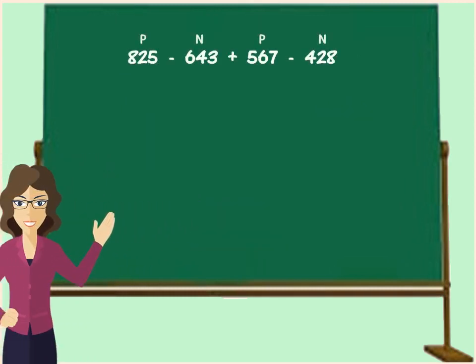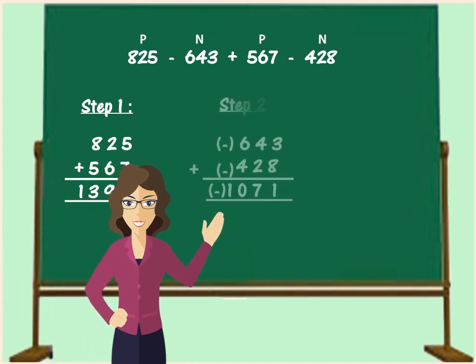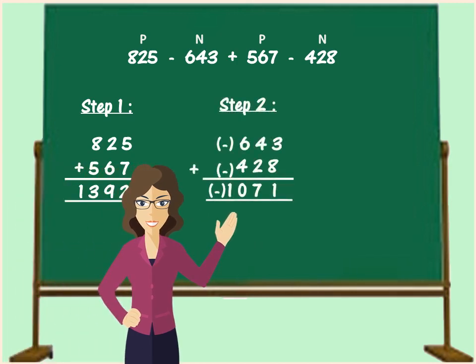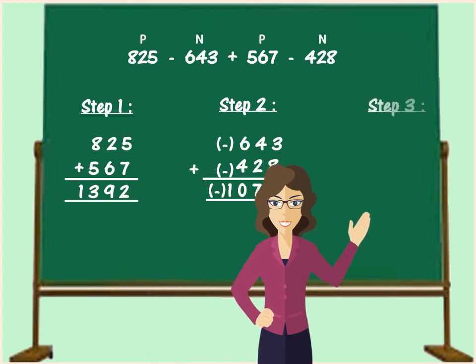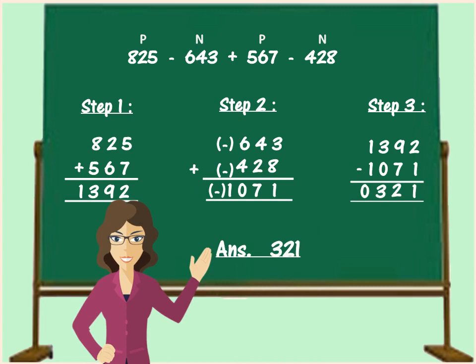In the end, we will do a quick revision of all the steps. In step 1, we added all the positive numbers to get the sum 1392. In step 2, we added all the negative numbers to get minus 1071. And in step 3, from the sum obtained in step 1, we subtracted the sum obtained in step 2 to get the difference. And the answer is 321.